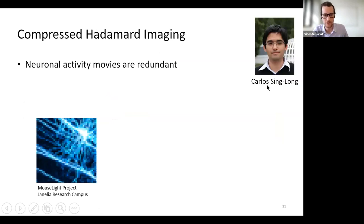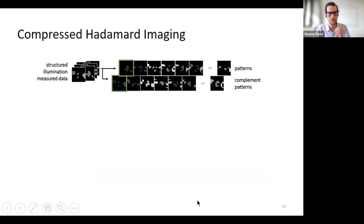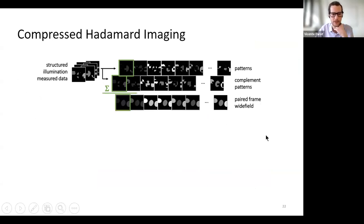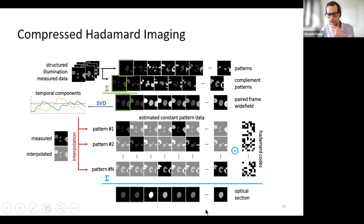To solve the problem of recording fast action potentials, I worked in collaboration with Carlos Simlon at Catholic University. We used ideas from other fields — compressed sensing, previously used in MRI of moving hearts — and developed an algorithm that uses a fast projection of illumination patterns paired with a demodulation method. If we capture pictures with the right illumination patterns, we can reconstruct signals from the optical section with the fast activity we want to record.